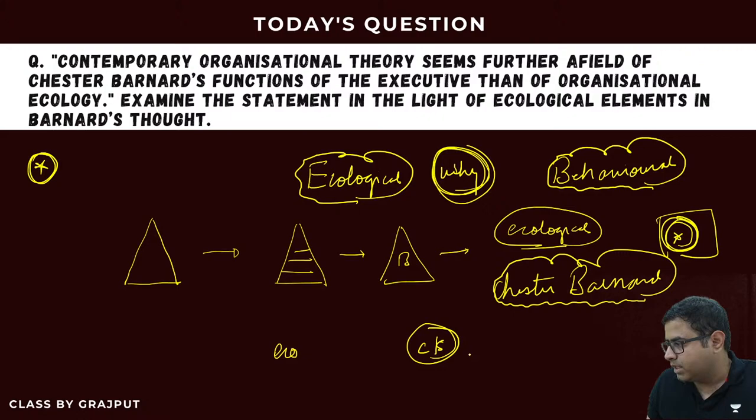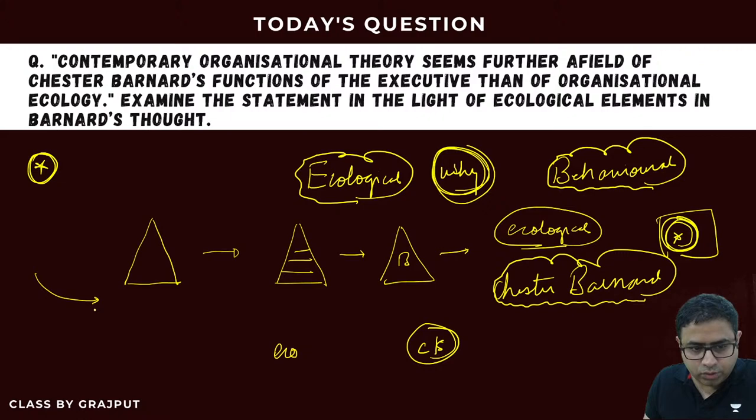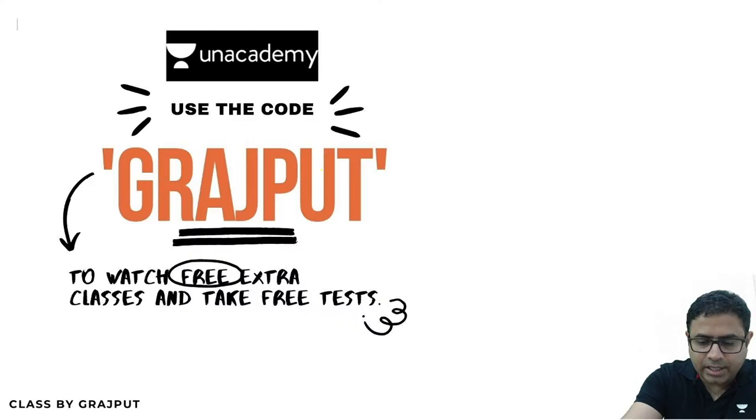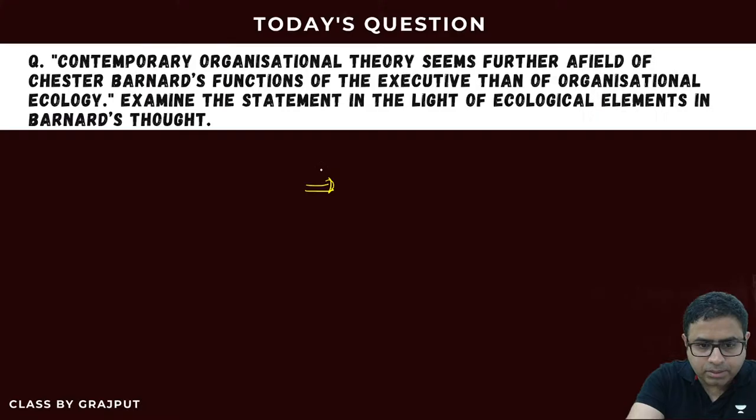Bernard gave us contribution-satisfaction equilibrium. What is contribution-satisfaction equilibrium? An employee contributes in an organization, but he will only continue to contribute as long as he receives satisfaction. If he is not getting satisfaction, he will want some kind of inducements. Chester Bernard says inducements are of two types: general and specific.